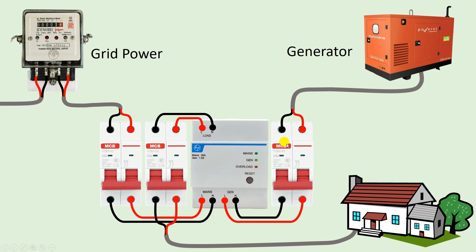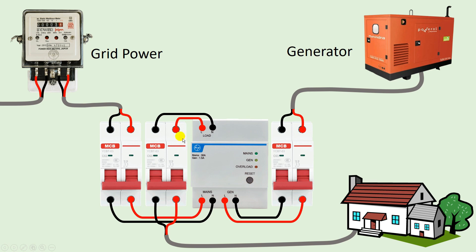How this ATS works — the work of the ATS is to do the changeover. If the grid power supply fails, then the ATS starts using the generator power supply, meaning the power supply now going to your home is the generator's power supply. And when the grid power supply returns to normal, the ATS will again do the changeover, and the power supply going to your home is once again the grid power supply.